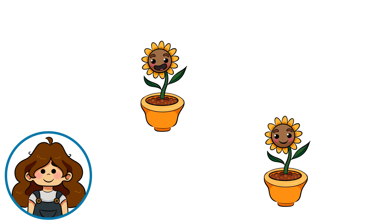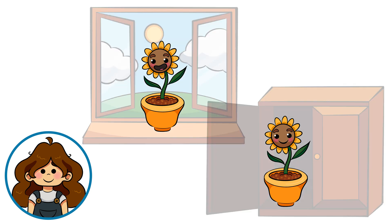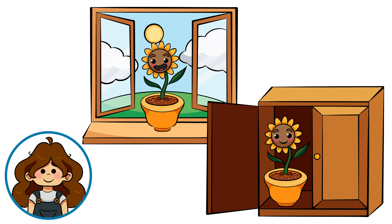Next, for our sun experiment, let's start again with two plants, but this time with the same amount of soil and water. Instead of keeping them in the same location, we'll put one plant where sunlight can't reach, such as a drawer or cabinet. Don't forget about it though. From there, we can observe the changes between the plants after one week.